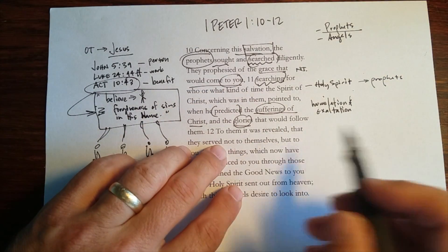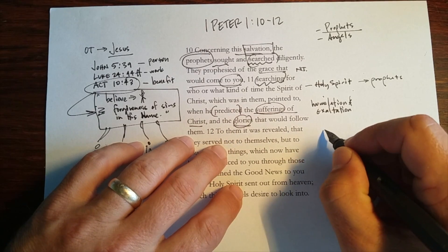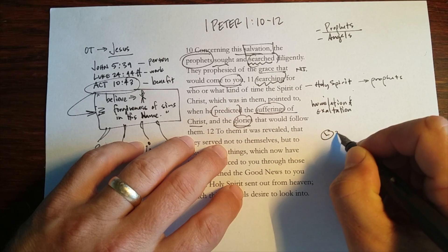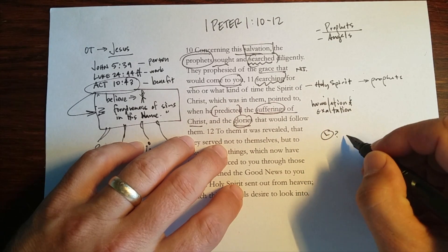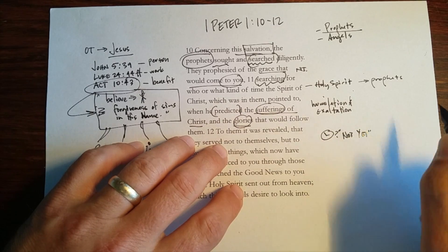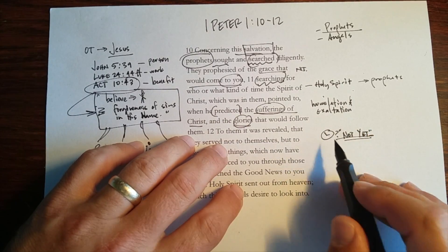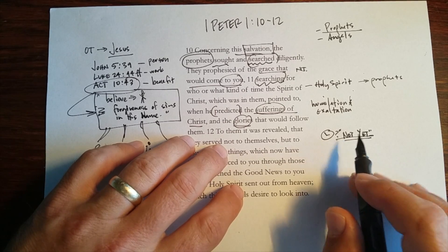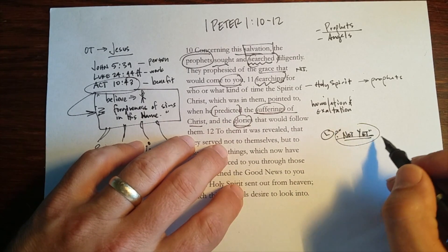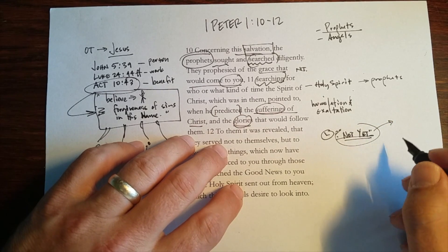Now the prophets, as they searched, you know, what time will it be when these things will happen? It's revealed to them that the time is not yet. For all the prophets, not yet, not yet, not yet. It's not going to happen. It's not for you. You're not going to see it. In fact, that's one of the marks of the prophets is that they were not yet. They were always directed to the future.